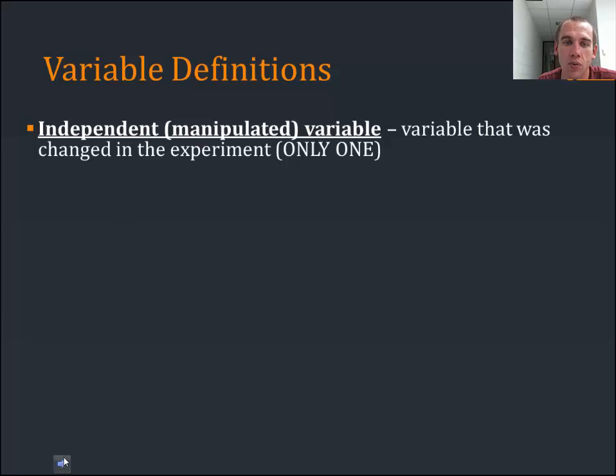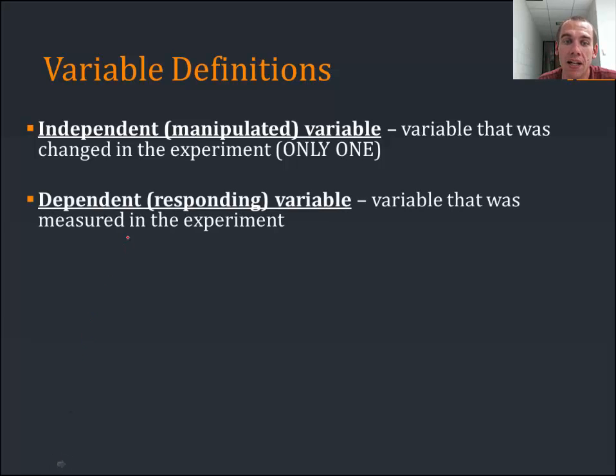Then you have what you measured, what we call the dependent or responding variable. We call it dependent because we changed this one. It depends on that variable. It responds to what we manipulated. So the dependent or responding variable is the one that we measure in an experiment.